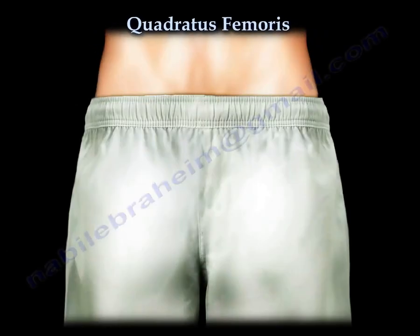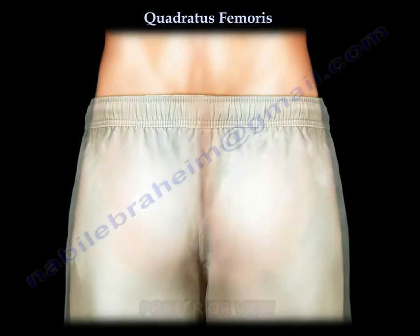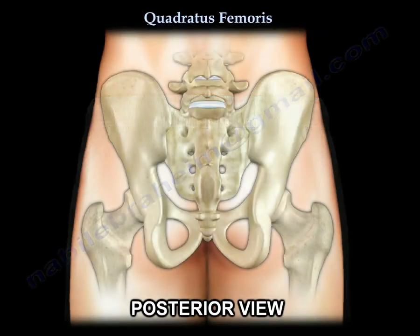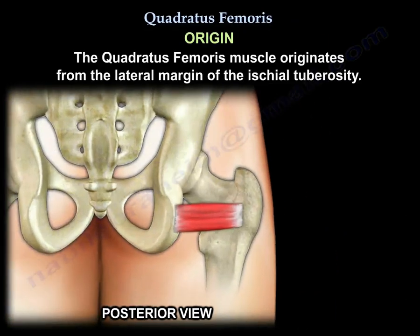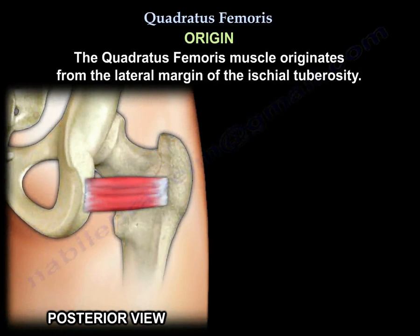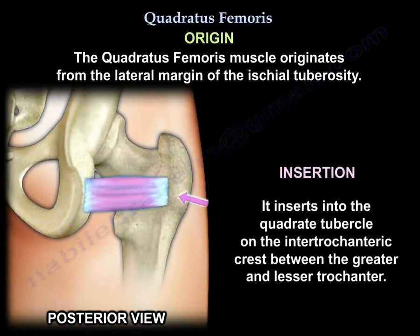The quadratus femoris muscle originates from the lateral margin of the ischial tuberosity. It inserts into the quadrate tubercle on the intertrochanteric crest, between the greater and the lesser trochanter.